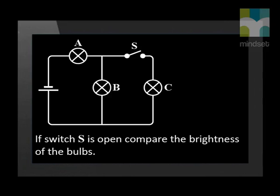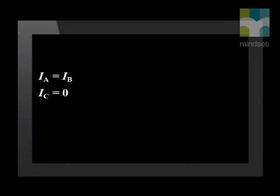If switch S is open, compare the brightness of the bulbs. If switch S is open, resistor C is cut off from the circuit. This turns both A and B into a series combination through which all of the current will flow one after the other. A and B will be equally bright and C will not shine.